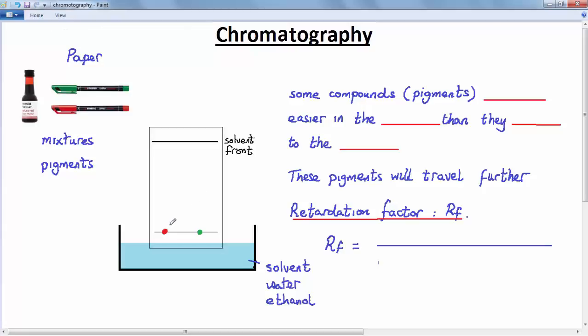What you will also see is that some of the pigments in the ink will travel further than others. The reason for this is that some compounds dissolve easier in the solvent than they actually bind to the paper. You can imagine that the solvent wants to dissolve the pigments and take them with it, and the paper wants to bind to the pigments and hold them back. So the pigments that dissolve easier in the solvent than they bind to the paper will travel furthest.